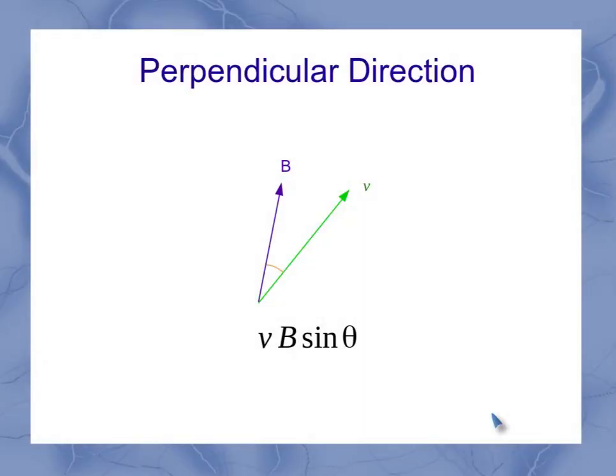So if I have velocity and magnetic field in any arbitrary direction, the theta I care about is the angle between those two vectors. And to multiply the perpendicular part, it's vB sin theta, either thinking of the B sin theta as the perpendicular part of the magnetic field, or the v sin theta as the perpendicular part of the velocity.